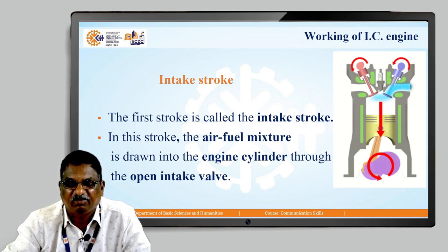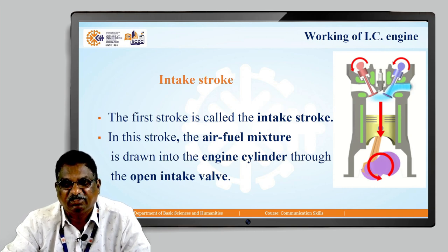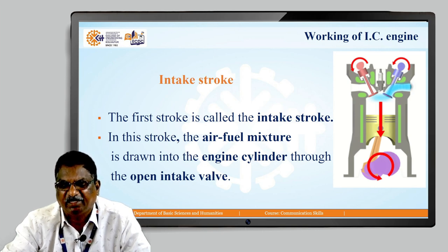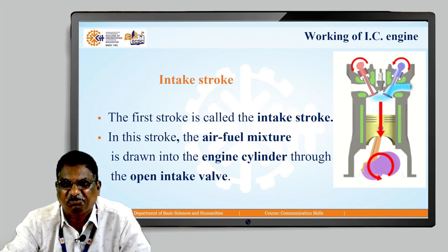The IC engine operation is divided into four parts, called the four strokes. The first stroke is called the intake stroke. The engine has an inlet valve and an exhaust valve. Initially, air and fuel are taken inside the cylinder — the piston is moving down and the air and fuel mixture is drawn in. In this operation the inlet valve is open and we are taking air and fuel inside the cylinder; therefore, this is called the intake stroke.